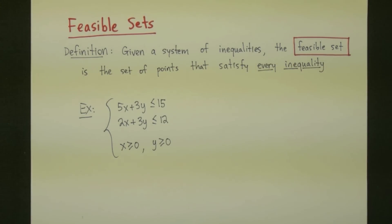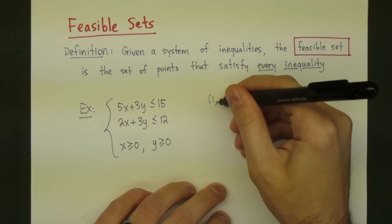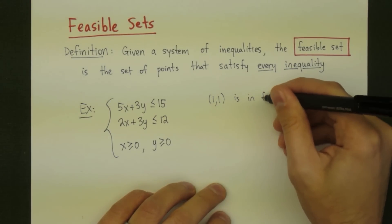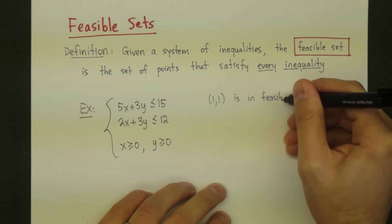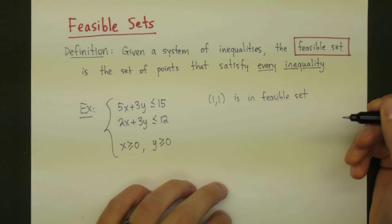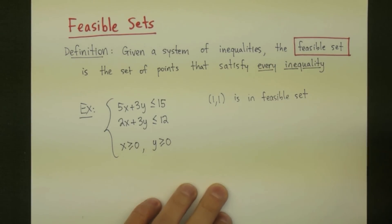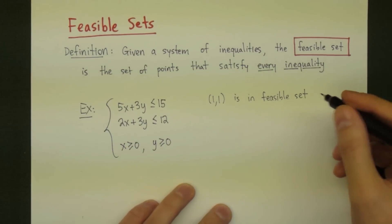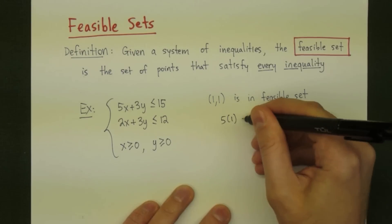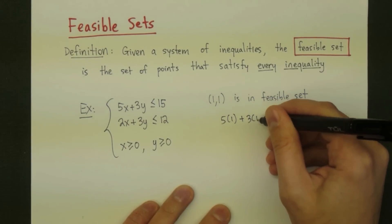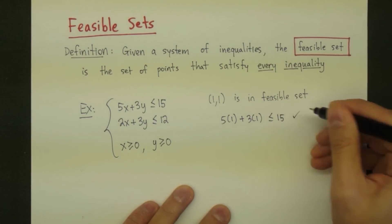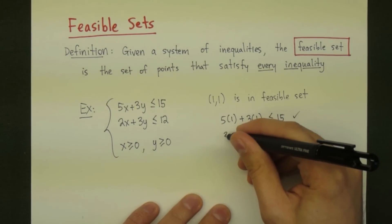A point in this feasible set will have to satisfy all of these inequalities. Let's take a look at the point (1, 1) — x equals 1 and y equals 1. To check if it's in the feasible set, we check it in all of the inequalities. For the first one, we take 5 times 1 plus 3 times 1, which equals 8, and 8 is less than or equal to 15.